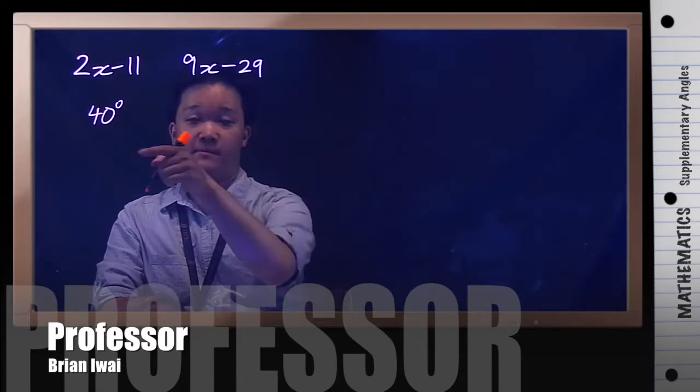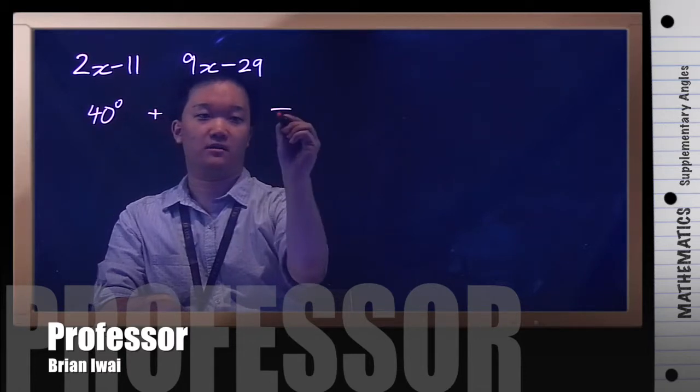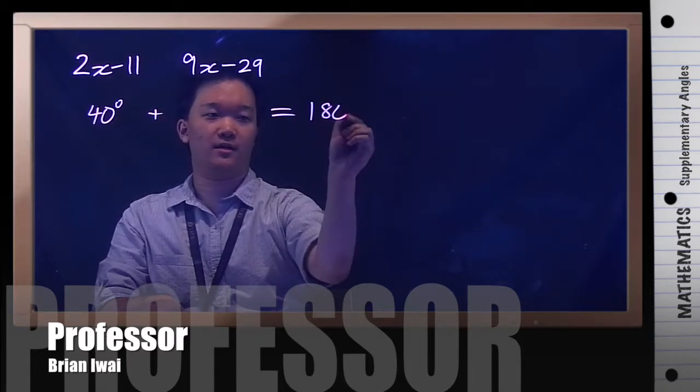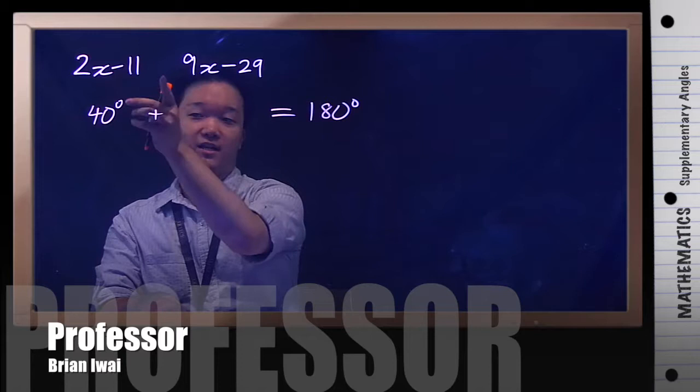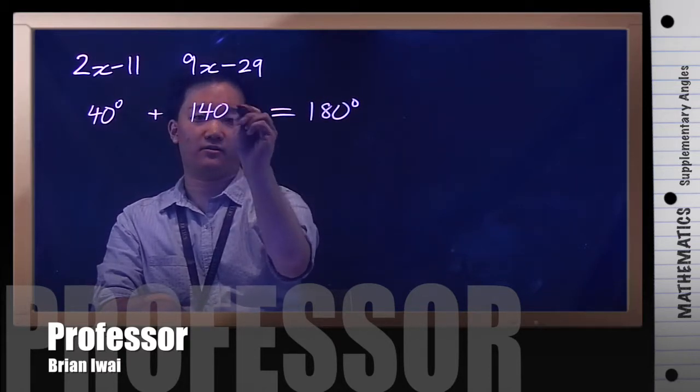So if they're supplementary, remember these two numbers, these two degrees, should add up to become 180. So if this was for example 40 degrees, then this would have to be 140 degrees.